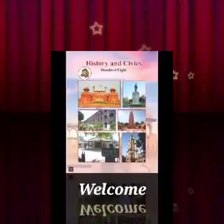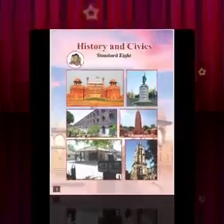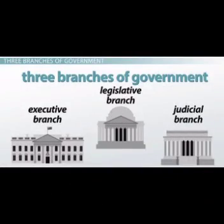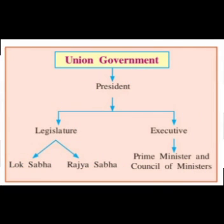Hello everyone, welcome to the online session of Standard 8th Civics, Chapter 4: The Indian Judicial System. In previous chapters of civics we studied about the three branches of government — the three organs: legislature, executive, and judiciary. Legislature is to make the law, the executive implements the law, and the judiciary provides justice.